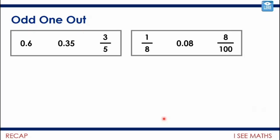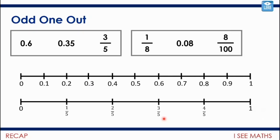So: 0.6, 0.35, and 3 fifths. If I bring up those number lines, I can see 0.6 is here and 0.35 is here, so one of them must be the odd one out — which is equivalent to 3 fifths. We can see 3 fifths: 0.2 is 1 fifth, 0.4 is 2 fifths, 0.6 is 3 fifths. So the odd one out must be 0.35.